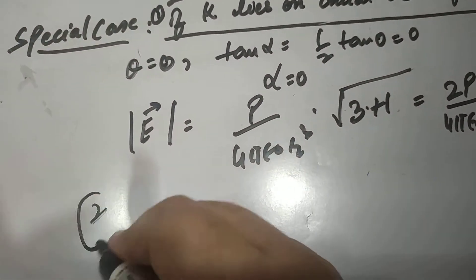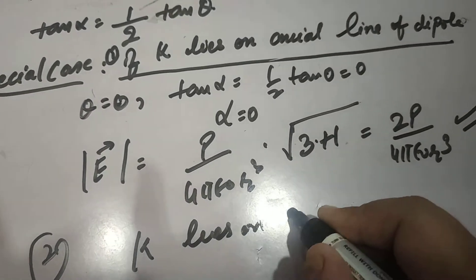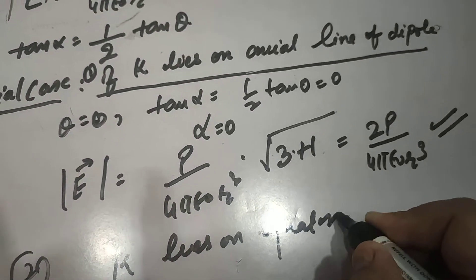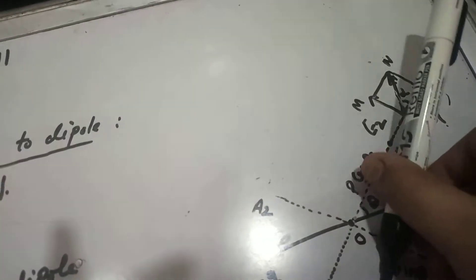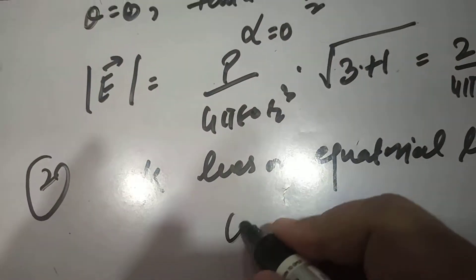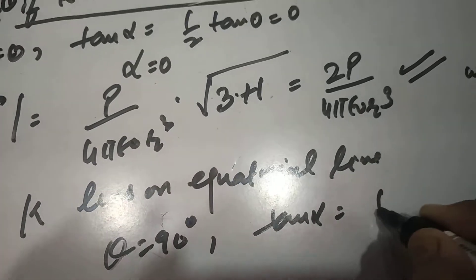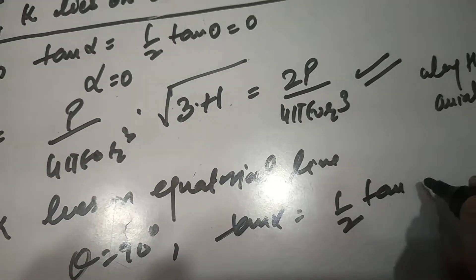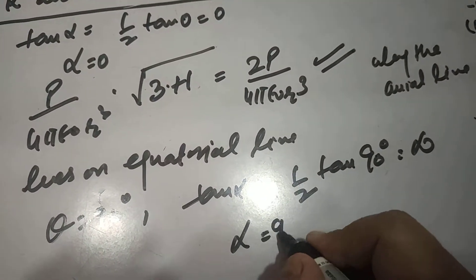Second case, when K lies on equatorial line. Equatorial line means this K lies at this point, so this theta becomes 90 degree. So theta is equal to 90 degree, tangent alpha is equal to 1 by 2 tangent of 90 degree.